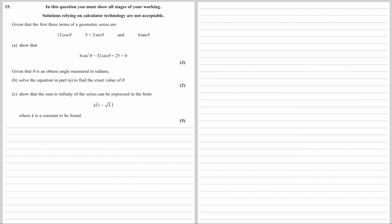Given that the first three terms of a geometric series are 12 cos theta, 5 plus 2 sine theta, and 6 tan theta, show that 4 sine squared theta minus 52 sine theta plus 25 equals 0.